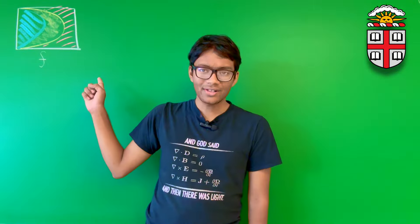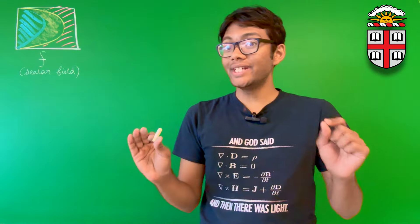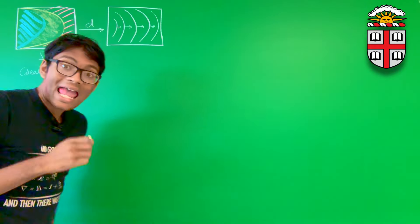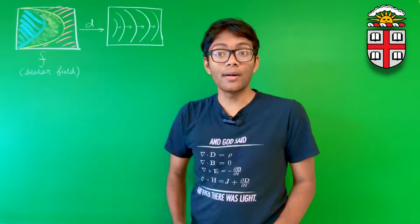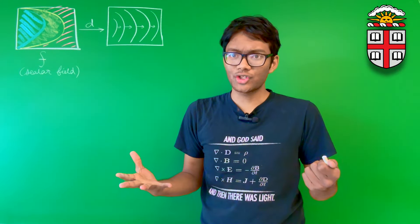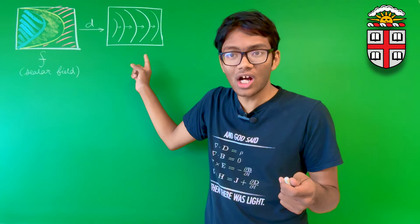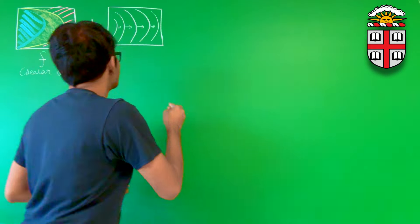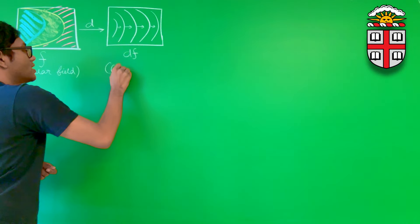This right here is the scalar field f. After I apply the differential operator d, here's how it looks. This scalar field has become a co-vector field — not scalar functions anymore, but fields of contour level sets. This is our co-vector field.